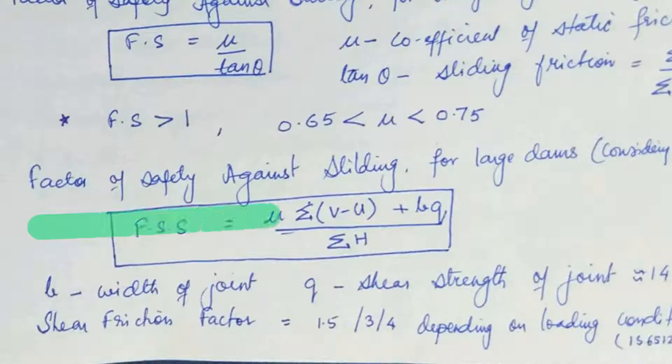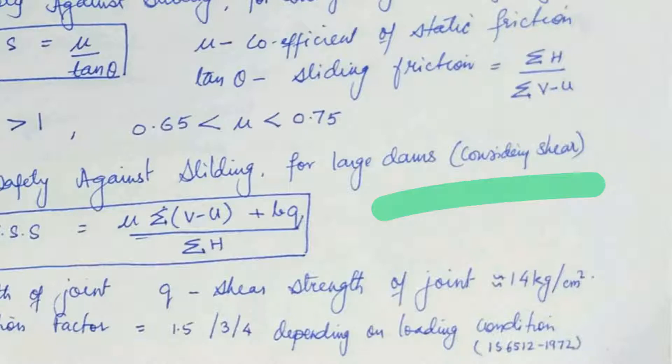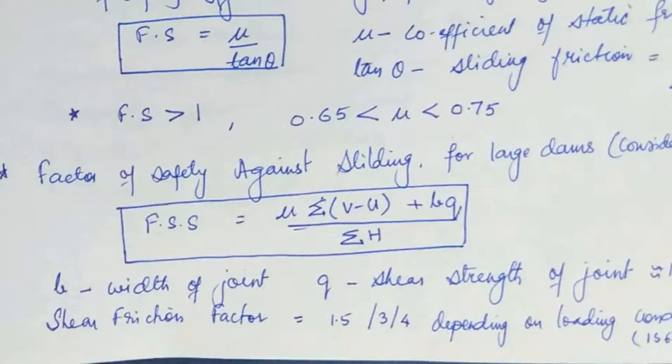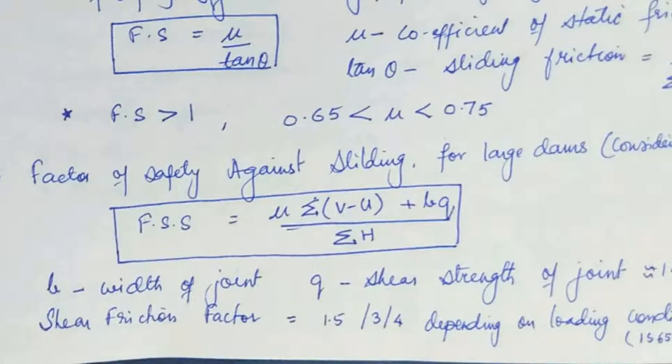Now let's see the factor of safety again sliding for large dams. In large dams, we are going to consider the effect of shear as well. Here, what we see that this SFF, which is actually known as shear friction factor, should be equal to mu sigma v minus u plus BQ upon sigma h.